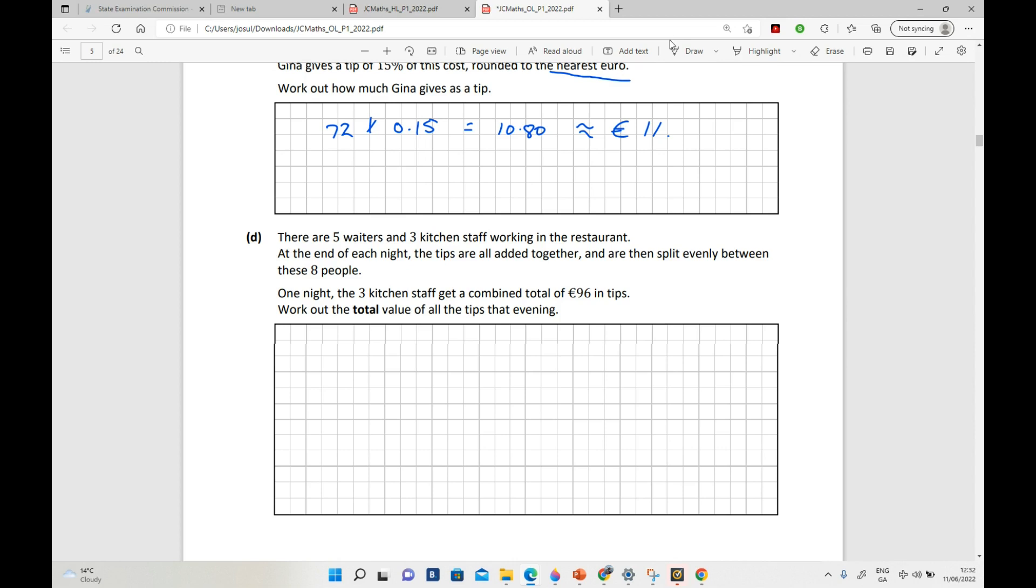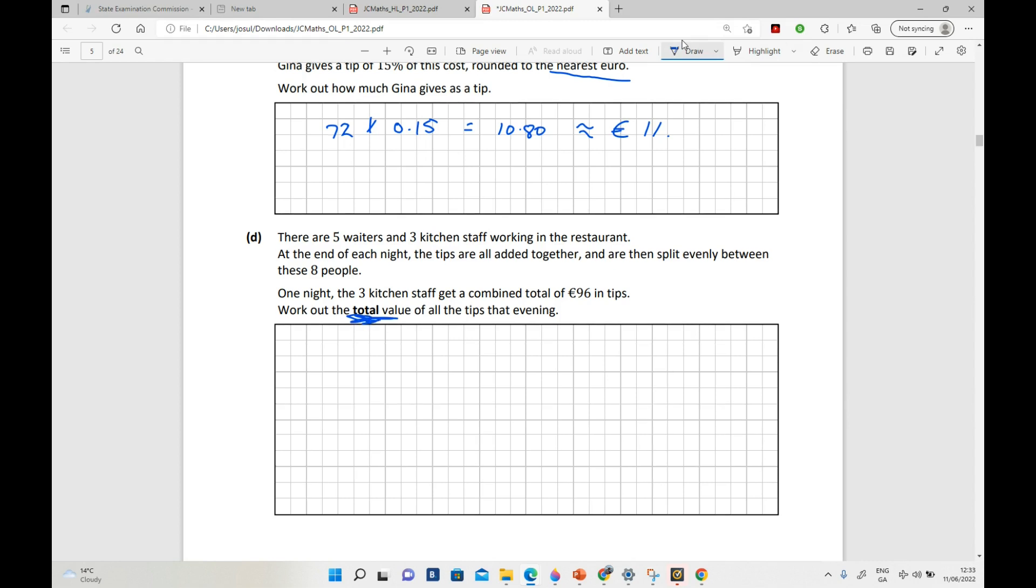Work out the total value of all the tips. Okay, so they put that word in bold for a reason. So you have been told that three people out of a total of eight have been given this amount of money. So this amount of money is in fact three-eighths of all the money, because we know that the tips are divided equally between all of them. So what we need to find actually is we need to find eight-eighths of all the money.